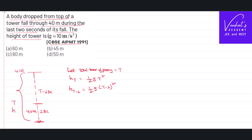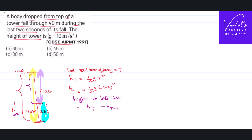So how can I get this value? If you look carefully, the total height covered is H, from top to bottom. The height covered in all the time other than the last 2 seconds is the small upper part. So the height covered in the last 2 seconds equals the height in total time minus the height in T minus 2 seconds. I know both values and their difference is given as 40 meters.